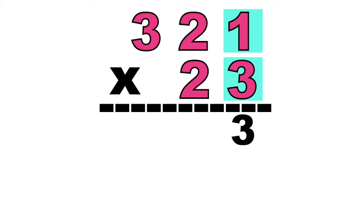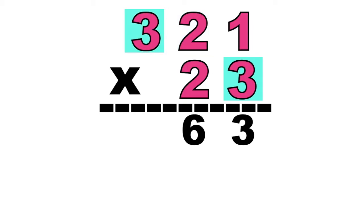Then let's proceed to the next one. 3 times 2 equals? Good job, children. It's 6. So we're going to write 6 under the 10s place. Then let's have the last digit. 3 times 3 equals? Fantastic! It's 9. So we're going to write 9 under the 100s place.